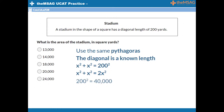200 squared equals 40,000. We can simplify by dividing both sides by 2. Therefore, x squared equals 20,000. Notice that x squared, which is x multiplied by x, will equal the area of the square stadium. We don't need to know what x, the side length, is — this is a nice shortcut. The correct answer is therefore D.